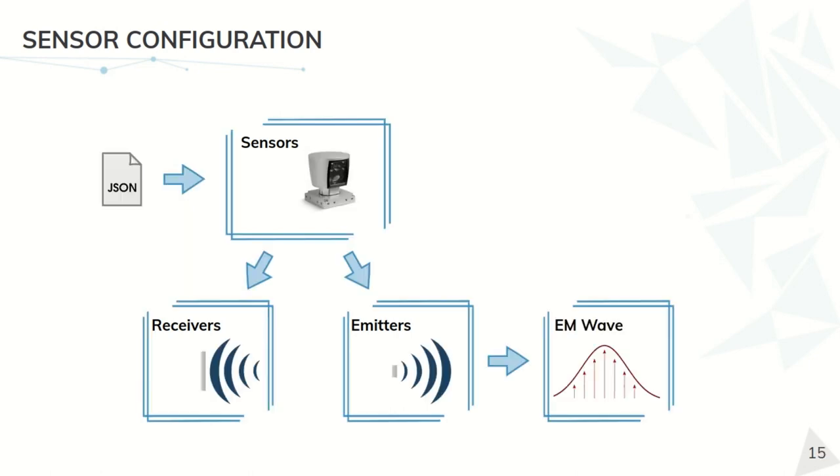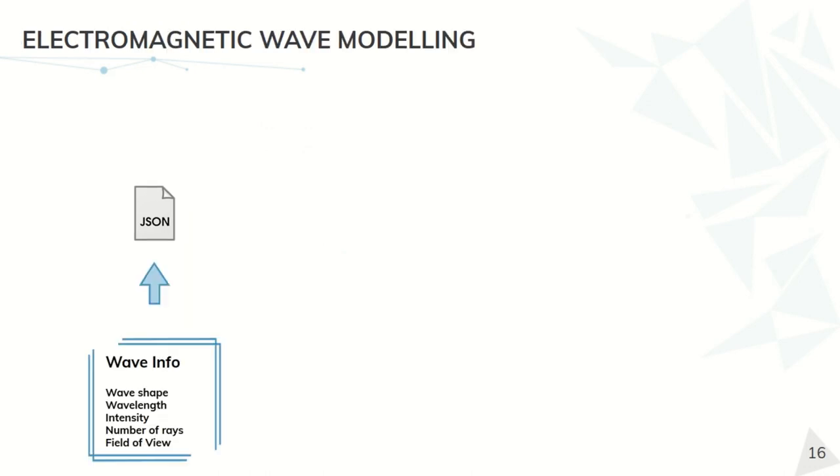And also, these emitters generate an electromagnetic wave that we need to model. In this case, we can also easily specify all of its important features, like the wave shape or the wavelength. From this, we can generate our electromagnetic wave object that can be sampled into rays when needed.